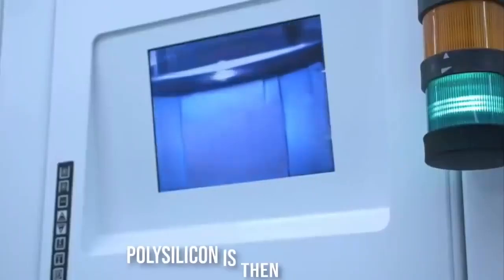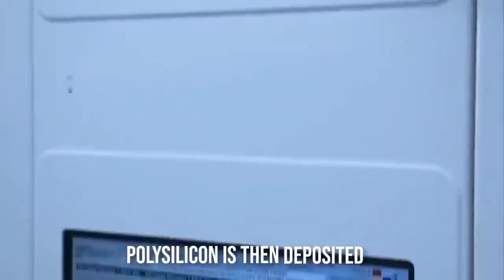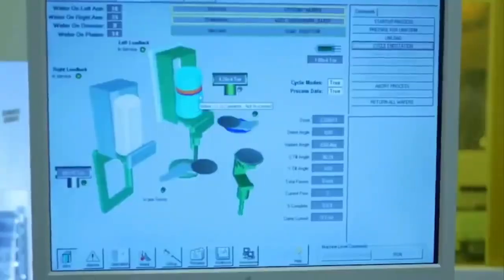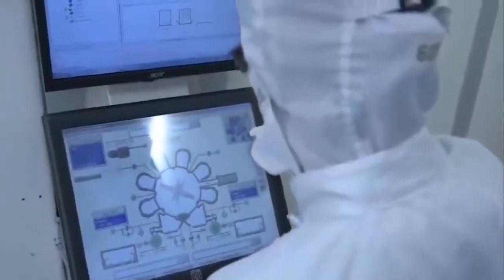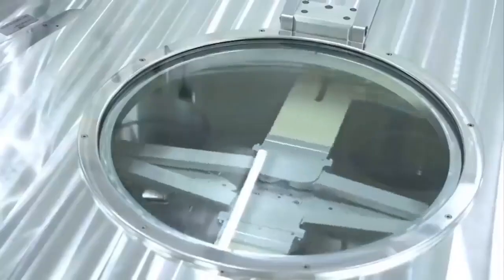The polysilicon is then deposited on this insulation layer and then the photoresist is applied once again and the wafer is exposed to light through the mask. The exposed photoresist is stripped again and now the polysilicon and the thin oxide layer is etched off these two layers.